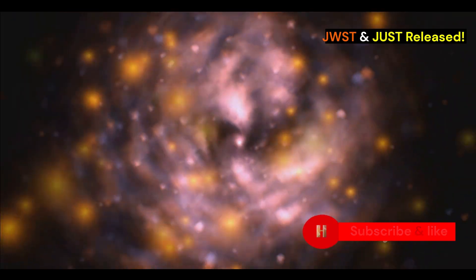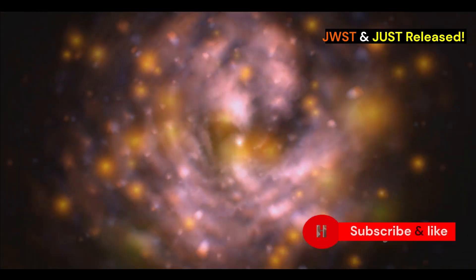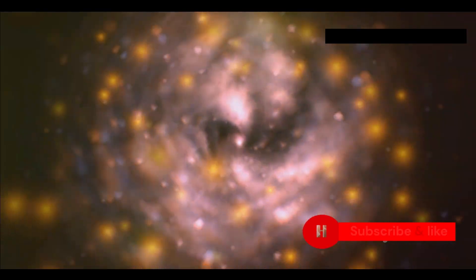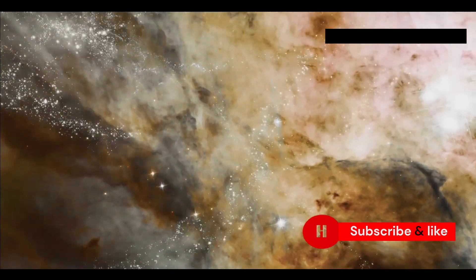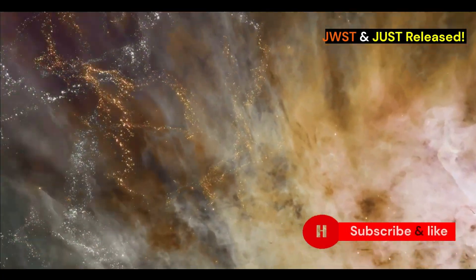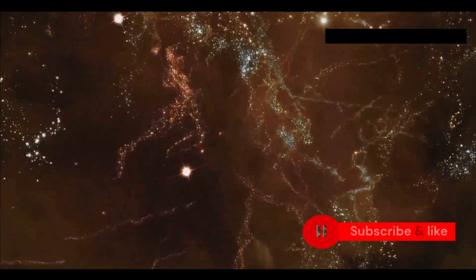JWST also took an amazing picture of Stefan's Quintet, a group of five galaxies that are caught in a kind of dance because of gravity. This picture shows us the incredible ways these galaxies affect each other, with streams of gas and dust stretching out for hundreds of thousands of light years.